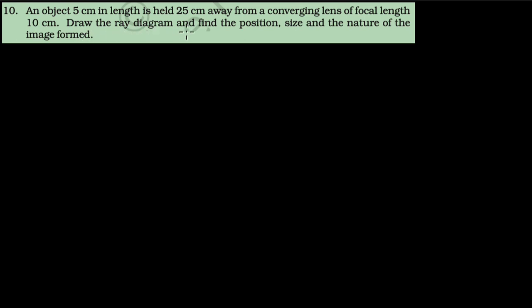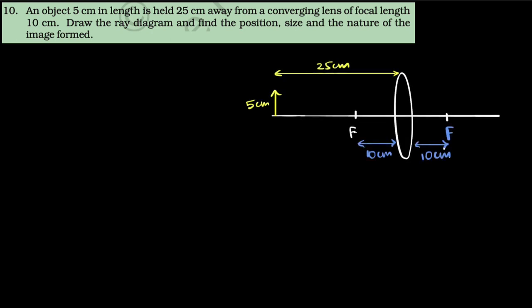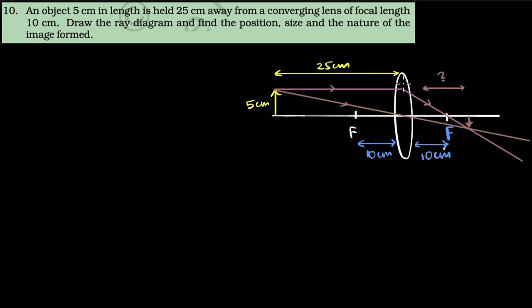We are asked to draw a ray diagram, so let's do that first. We are given a converging lens of focal length 10 centimeters, and an object is kept 25 centimeters away from it, and the height of the object is given as 5 centimeters. We draw one ray of light that's parallel — it goes through the focus — and another ray of light going through the optic center goes undeviated. That gives us the image. Our goal now is to find the image distance, the size of the image, and the nature of the image.